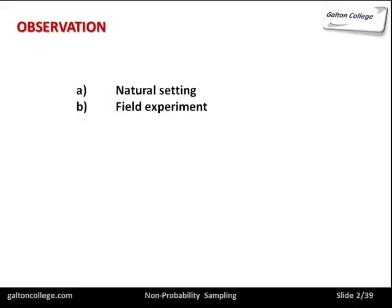Observation was not really acceptable to many people back in the early days of surveying and the development of surveying techniques. But throughout the 1960s and 1970s, disciplinary areas like sociology and psychology started to use participant observation quite a lot. And now it's become quite acceptable as a form of data collection. It takes place in a neutral setting — it's not a contrived situation. The observer goes to the area where the event is happening, where the people are, and records his or her observations accurately. So it's like a field experiment.